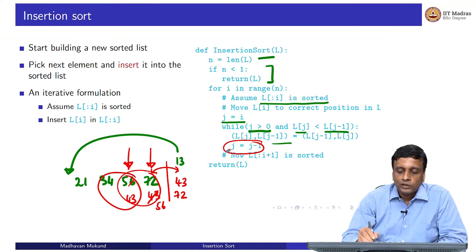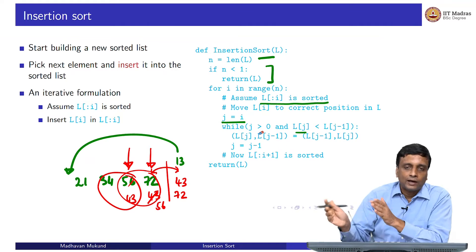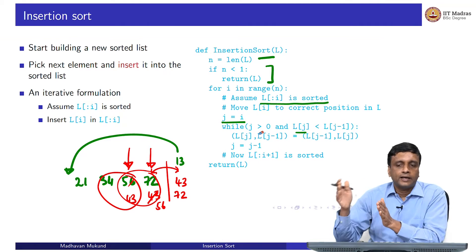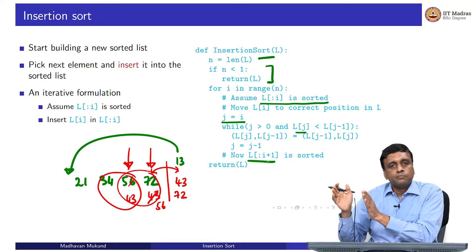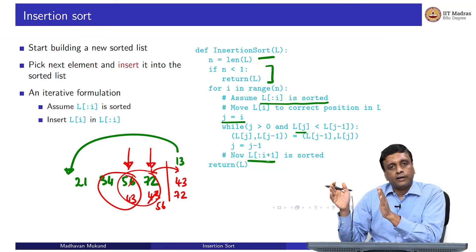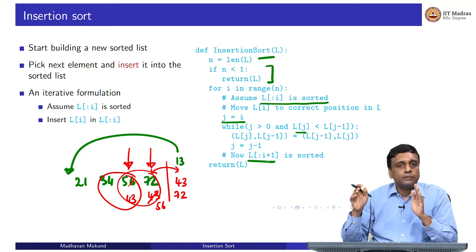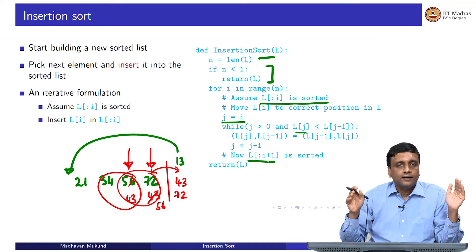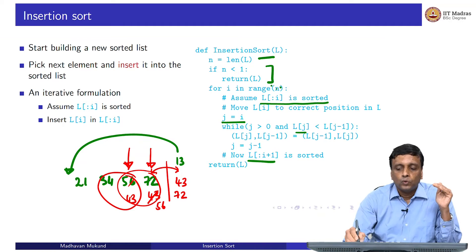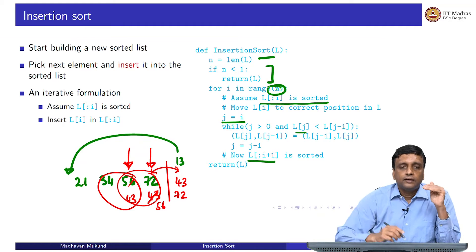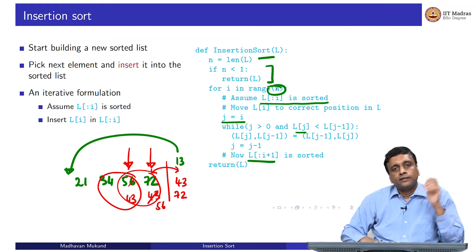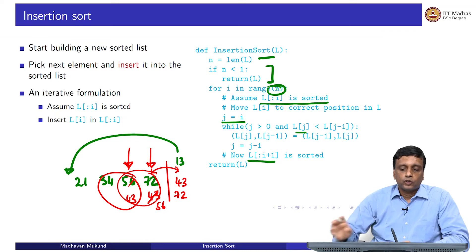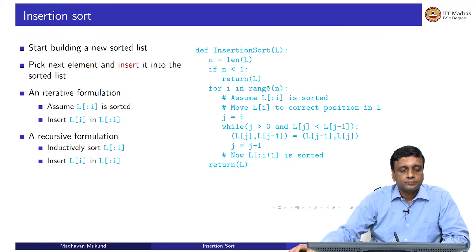This is the insert operation. Once you have moved l[i] backwards to the correct position, you can claim that the sorted prefix has been extended from i to i+1. So the invariant has been extended. In the limit, as you go to the last position, you will have extended the prefix to the entire list. So the whole thing will be sorted. This is insertion sort.